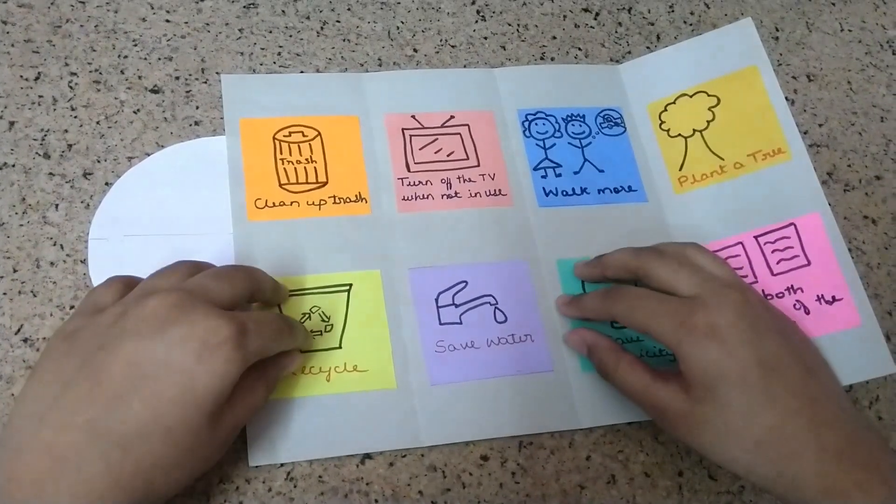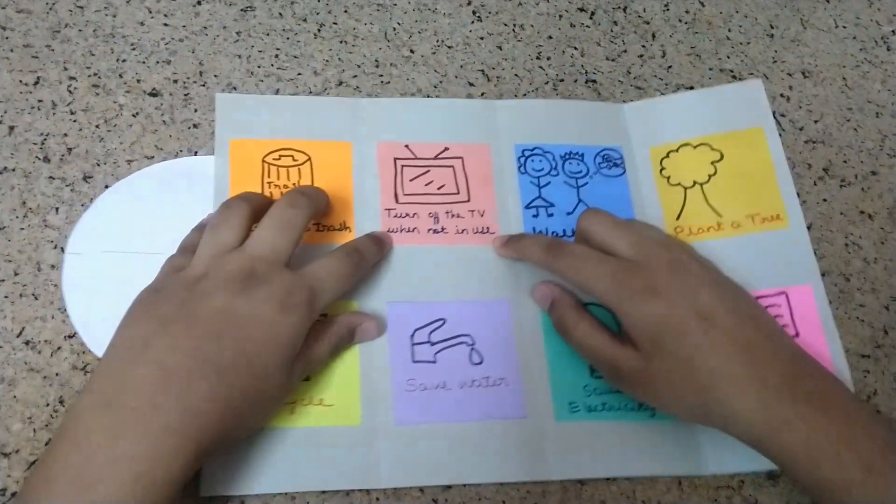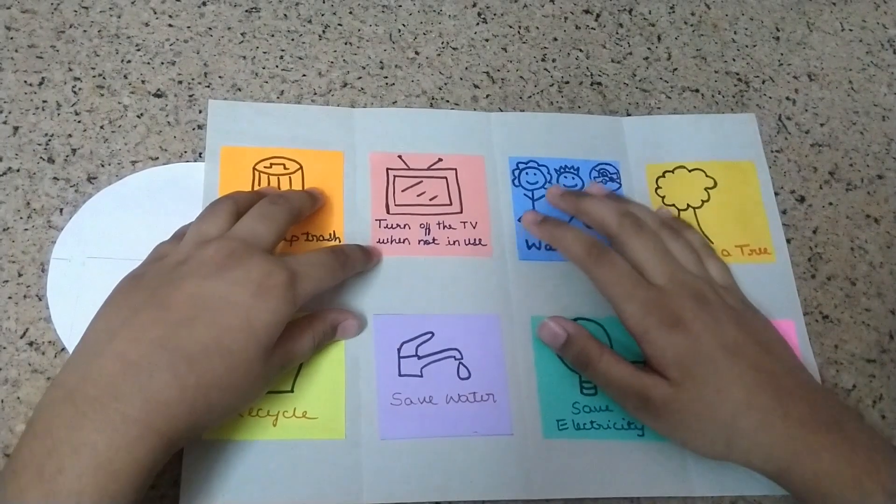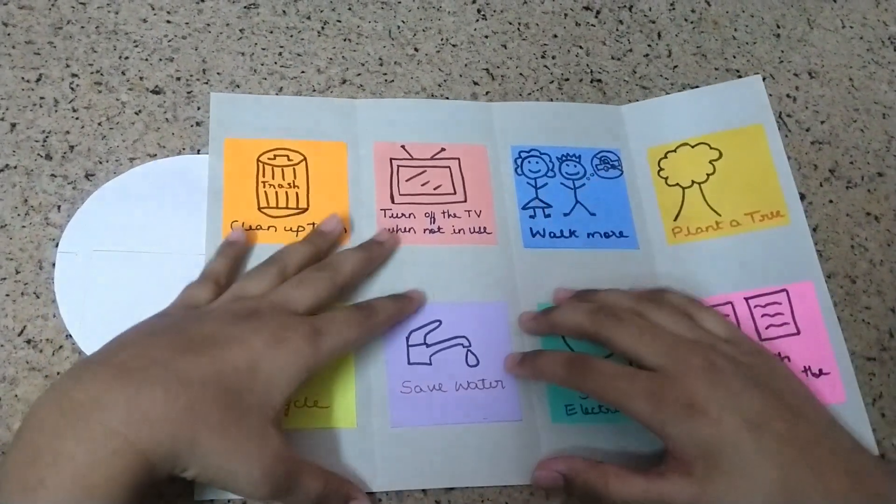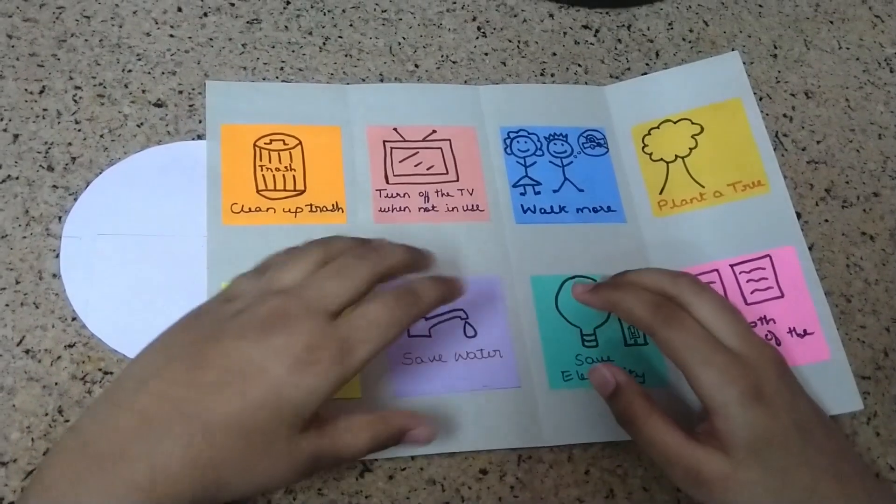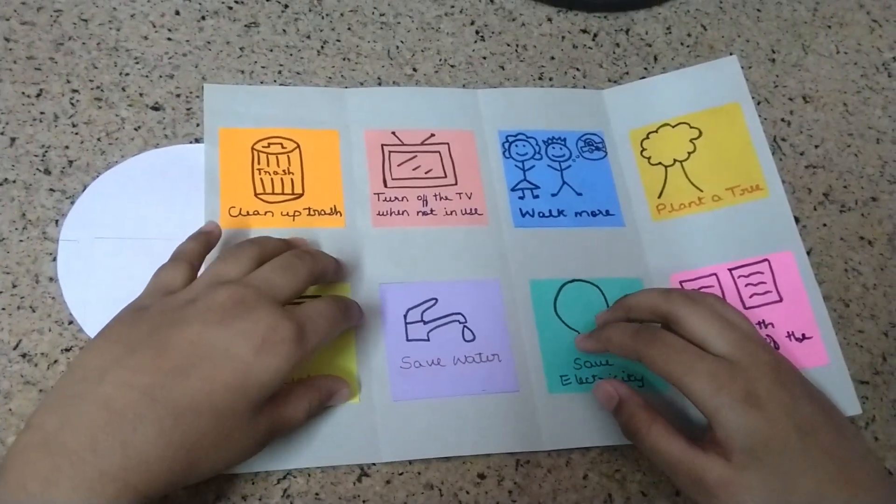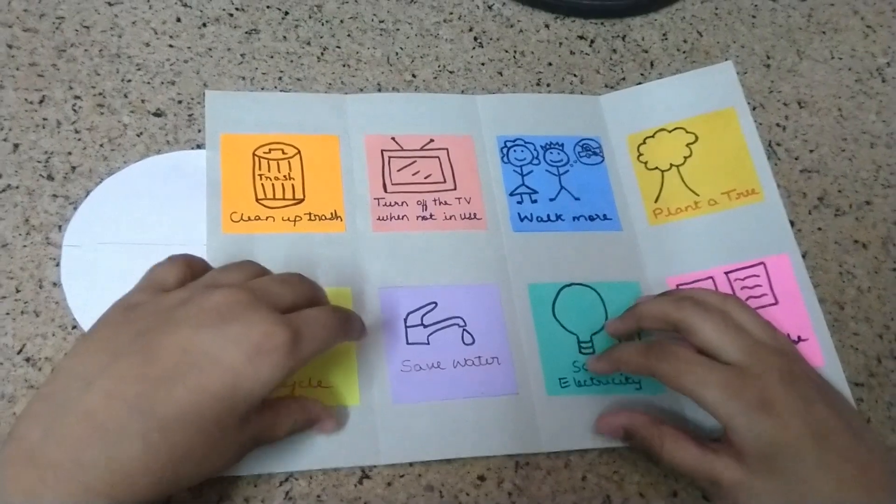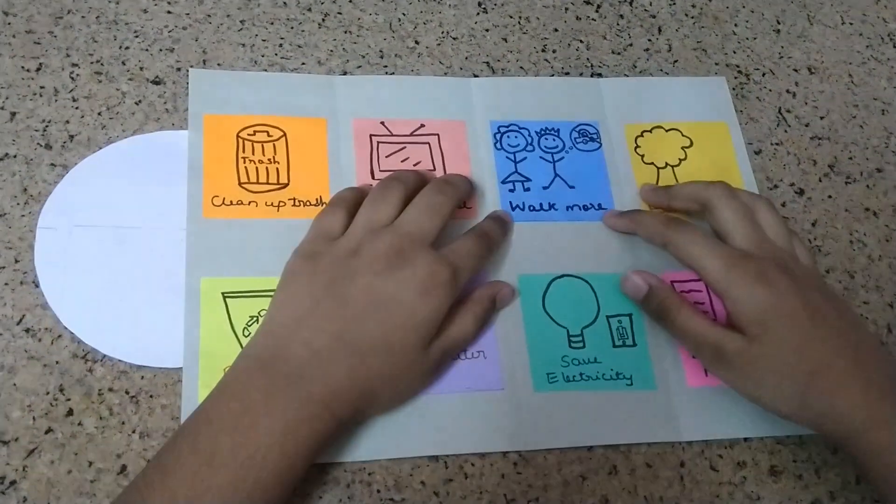The third point is turn off the TV when not in use. The fourth point is save water. We should turn off the faucets while brushing our teeth and take shorter showers.